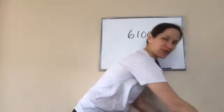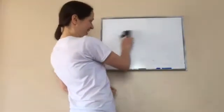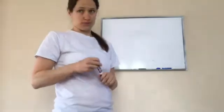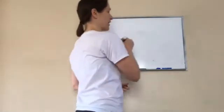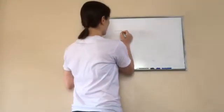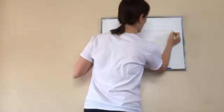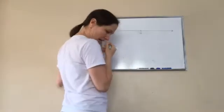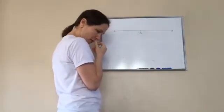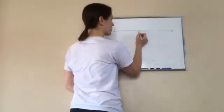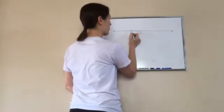Okay, sixth grade lesson 100 on algebraic addition using an integer scale. The first thing I want you to do is draw this on your paper — draw a line, put a middle mark at zero, and then go to about 12 on each side: 1, 2, 3, 4, 6, 7, 8, 9, 10, 11, 12.